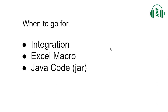Let's look at the points we need to consider before deciding. For integration, we can build real-time or scheduled integrations to read data from the source system, map or enrich the data, and send or load it into the target system. We go for integration when we have a licensed integration tool and the customer is expecting scheduled daily or real-time integration.